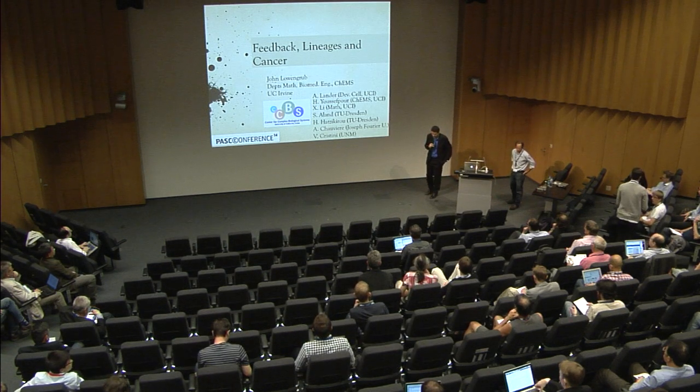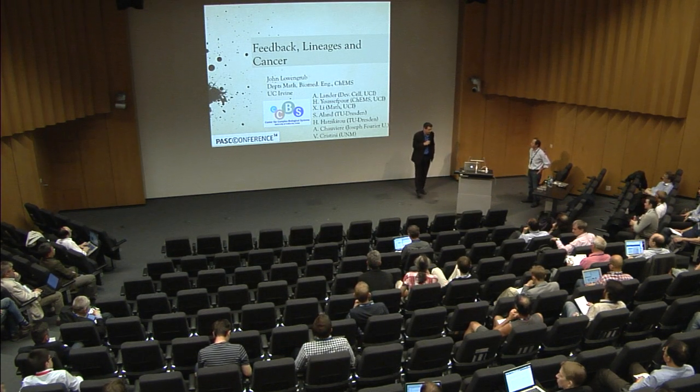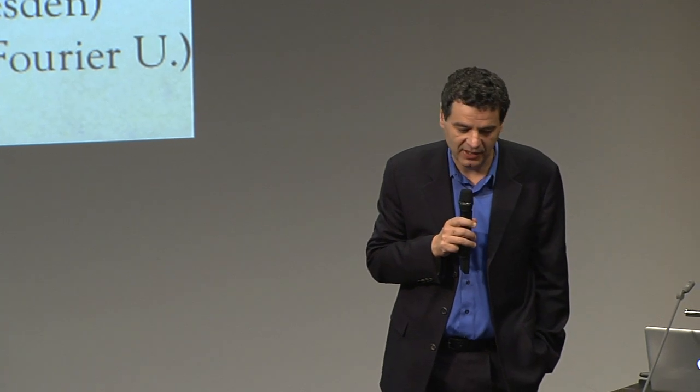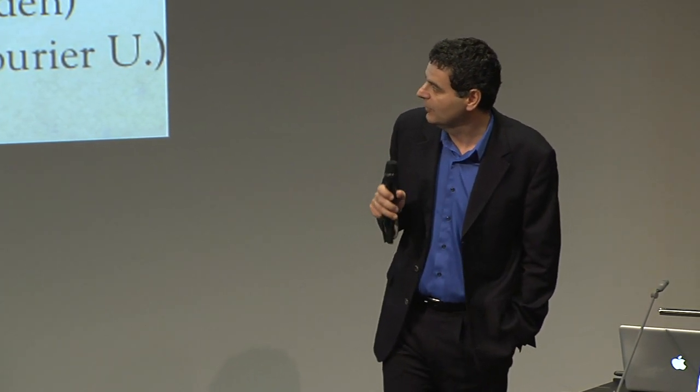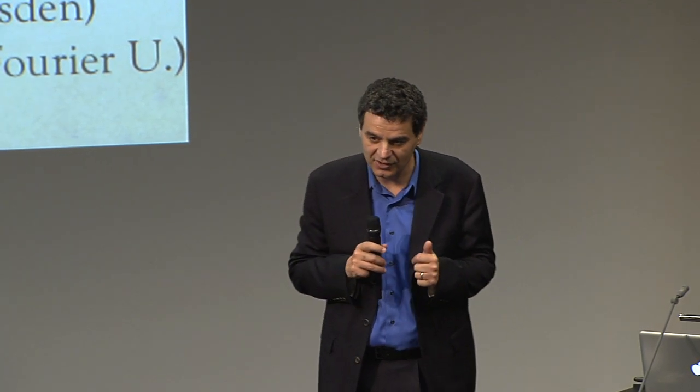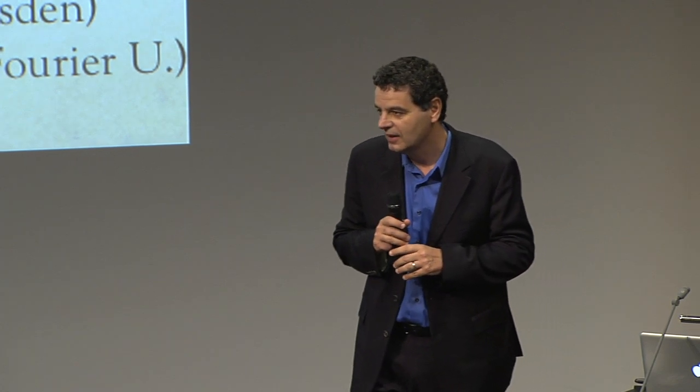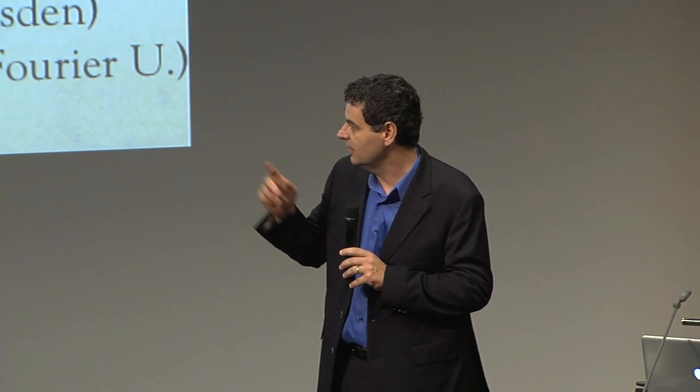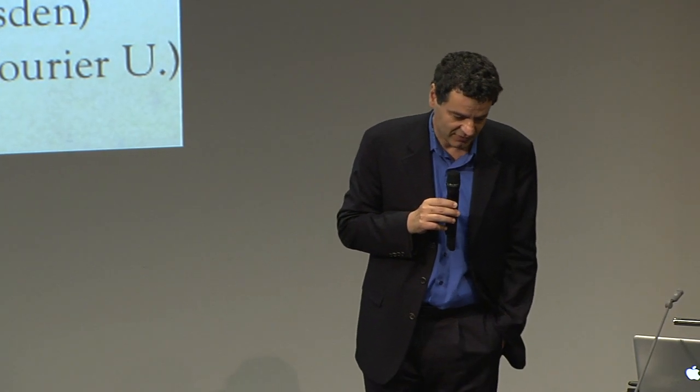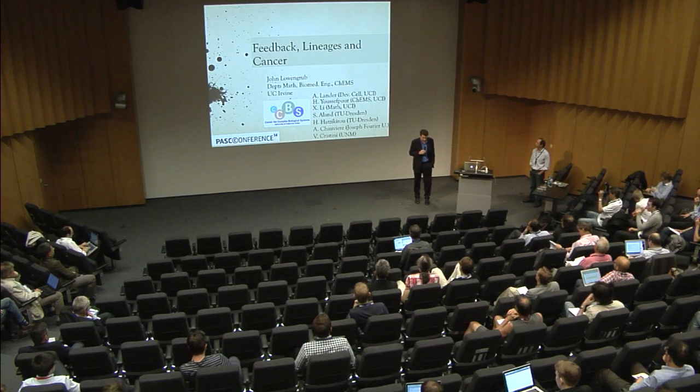We're moving to the life sciences, and I have the great pleasure to introduce Professor John Lovengrub. Professor Lovengrub did his PhD in applied mathematics at the Courant Institute of Mathematical Sciences in New York, and then after holding various positions in universities like Minnesota, he moved to UC Irvine, where he's a professor in the Department of Mathematics, Biomedical Engineering, Chemical Engineering, and Material Sciences, and co-directing the program on Systems, Targets, and Pathways at the Chow Center for Complex Biological Systems.